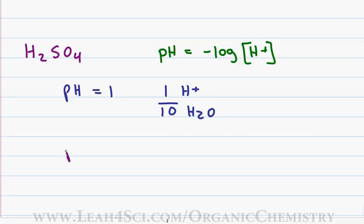And if I have an acid with a pH of 2, still a very strong acid, that means I have 1 H+ for every 10 to the second or 100 water molecules.